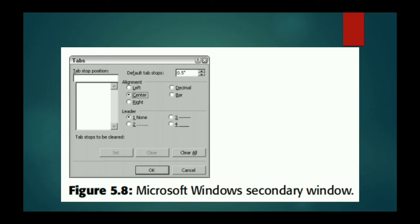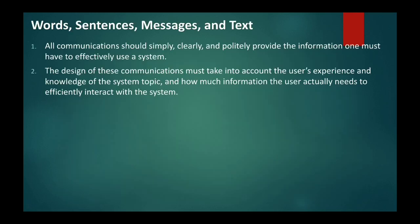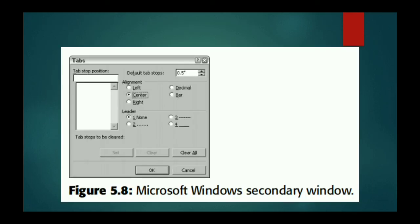To summarize, we have learned two types of windows: the primary window and the secondary window. The primary window is the initiator and the parent window. The secondary window has two sub-types: the dependent secondary window, which depends on the primary window, and the independent secondary window, which does not depend on the primary window. That covers the topic of types of windows. Thank you.